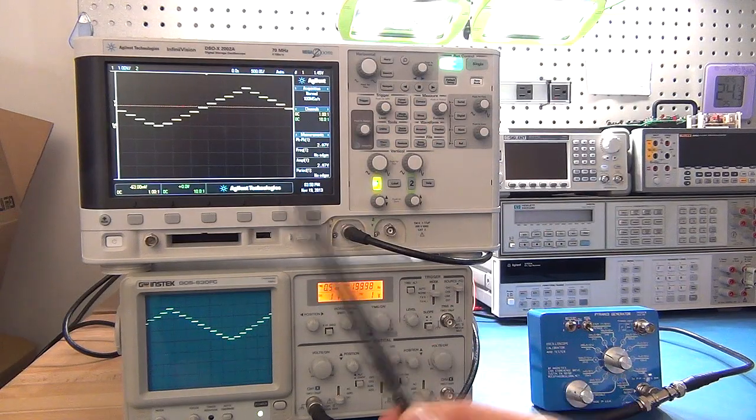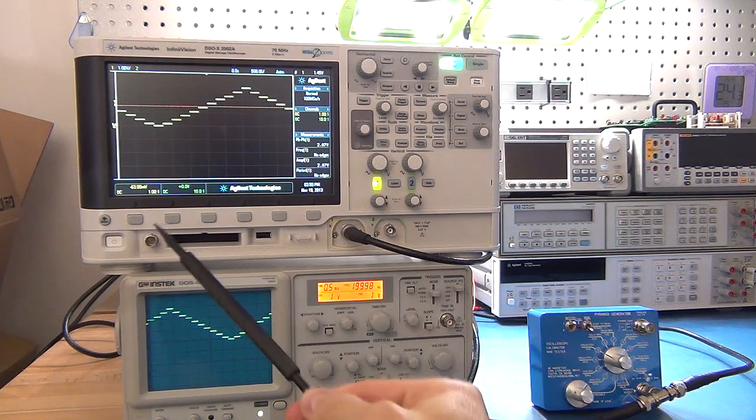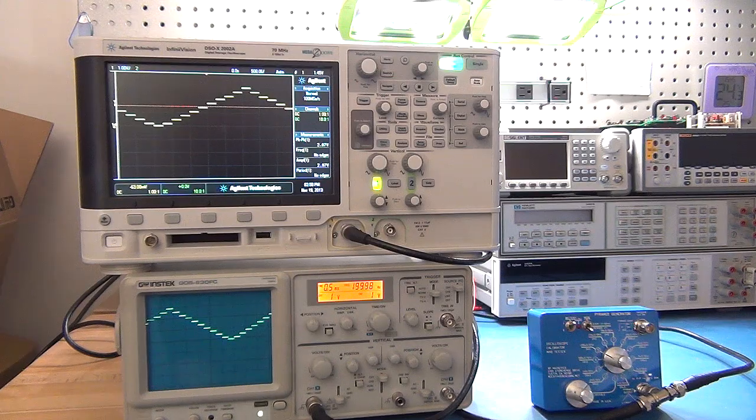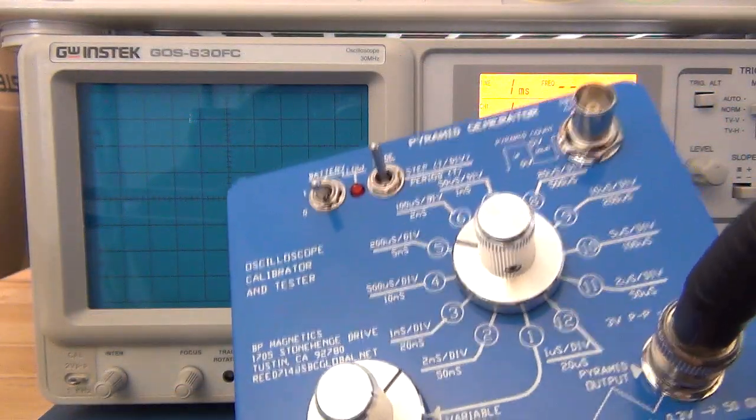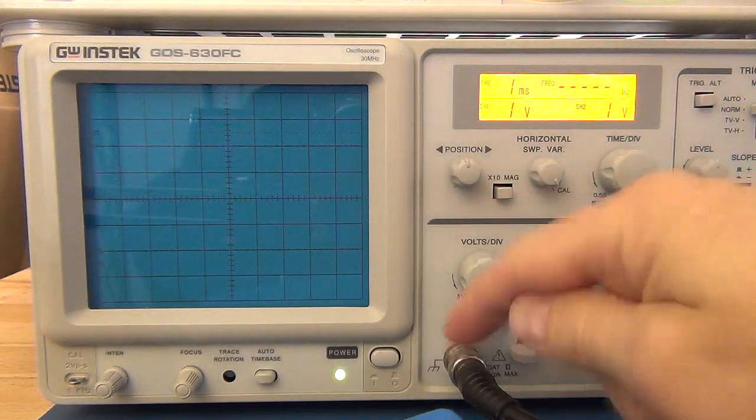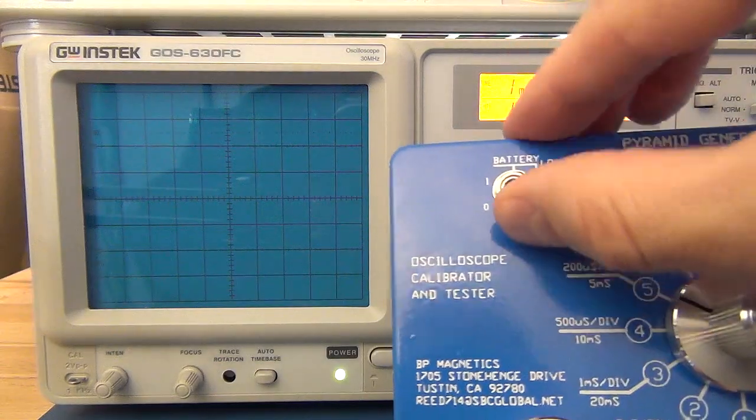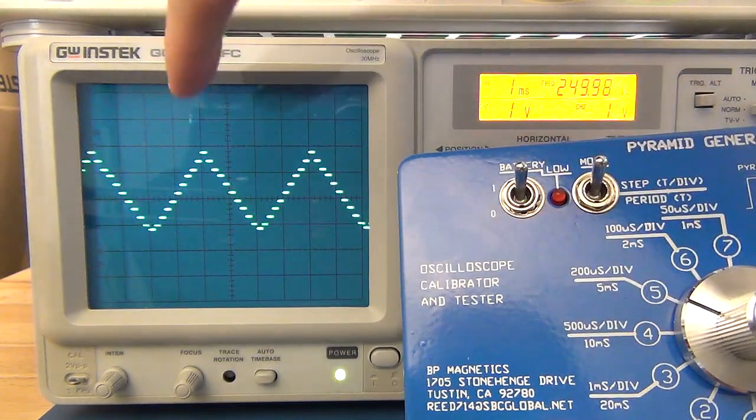Today I've got both an analog and a digital scope to demonstrate this against just to show you that it does work on both of them, but we'll start off by having a look at the analog oscilloscope. I've got the pyramid generator connected up to the oscilloscope, I've got a cable plugged into it and I'm going into channel 1. I'm going to switch it on and as you can see it pops up with the generated pyramid shape.